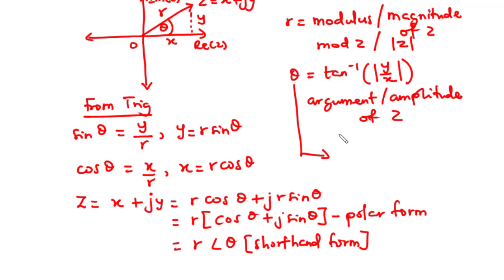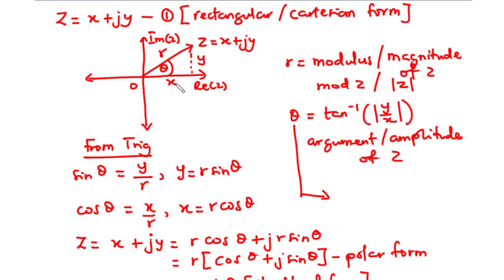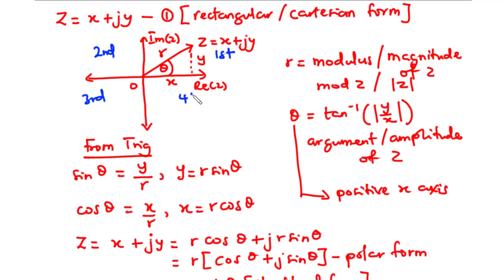Theta is the angle z makes with the positive x-axis. Note that if z occurs in the first quadrant, we use this approach directly to find theta. However, if it appears in the second, third, or fourth quadrant, further calculations are needed. Also, the value of r can be found using the formula: square root of x squared plus y squared.